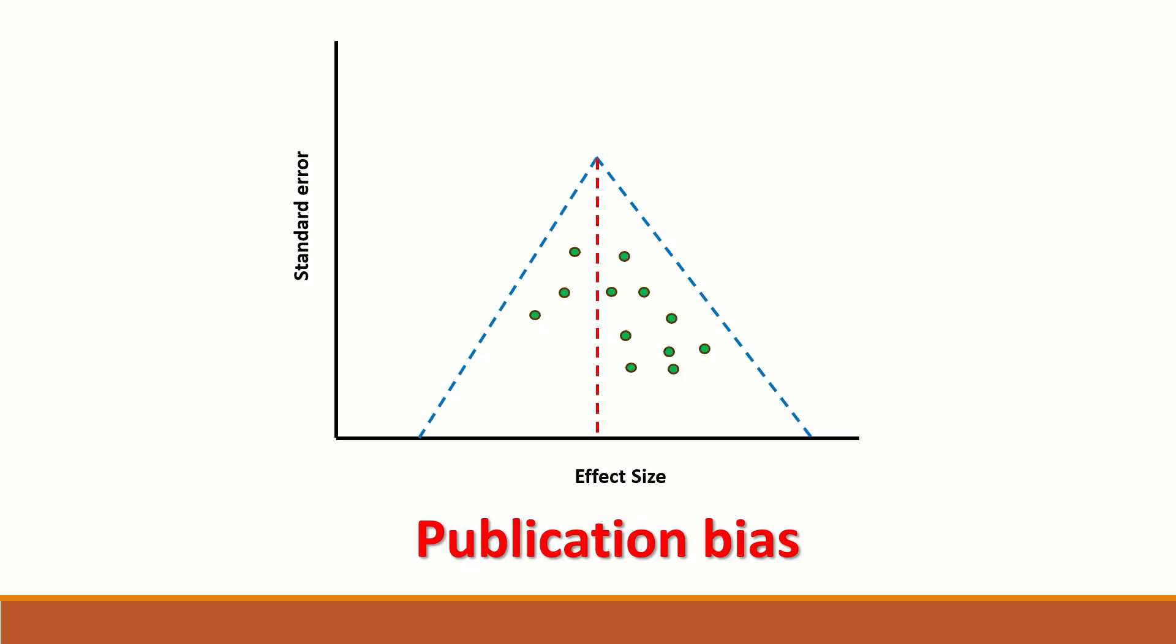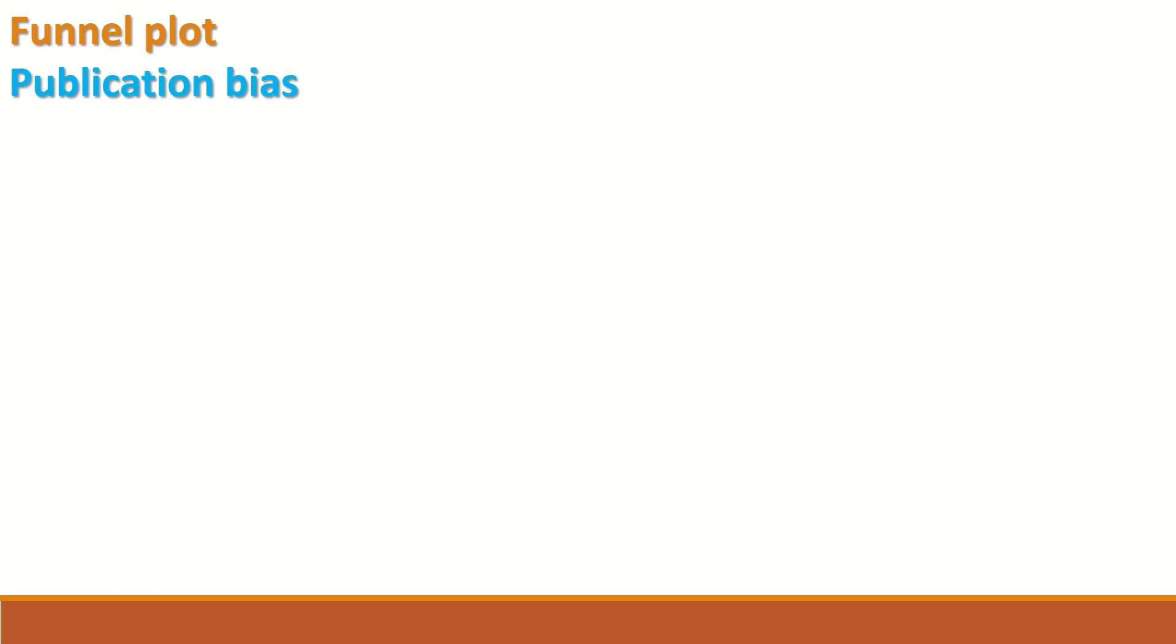The objective of drawing funnel plot is to check and assess whether there is a publication bias. From this funnel plot, it is clearly shown that the distribution of the effect size is clustered into one part and they are unevenly distributed, as the right section has a higher number of estimate of effect sizes and on the left side is smaller.